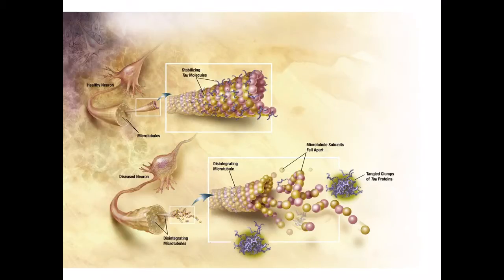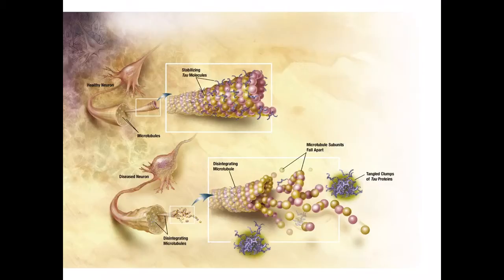In Alzheimer's, tau chemically changes, and it is caused to detach from microtubules and attach to other tau molecules, clumping and tangling within the cell. This is a tangled clump of tau protein. As these tau proteins detach from the microtubules, the microtubule subunits fall apart. This disrupts the microtubule network and creates blocks in the neuron transport system. This disassociation can also cause blocks in synaptic signaling.